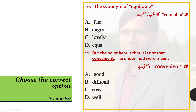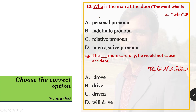Option number 11: 'but the point here is that it is not that convenient.' The underlined word is 'convenient'. The meaning of 'convenient' is: good, difficult, easy, or well? The correct option is 'easy' — convenient means easy.